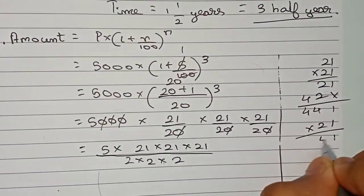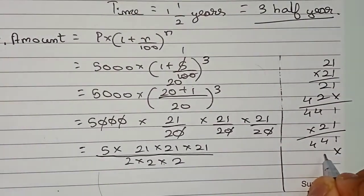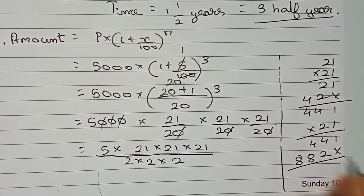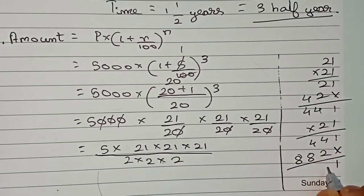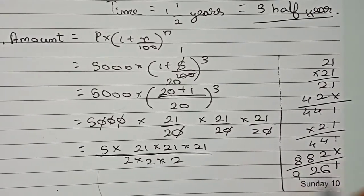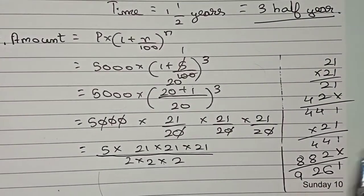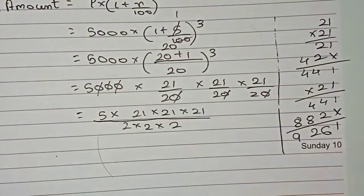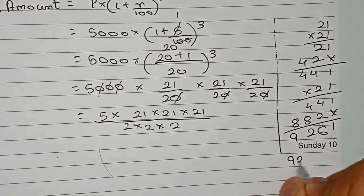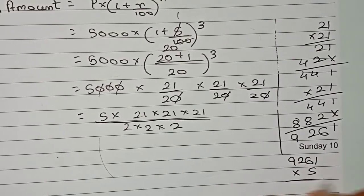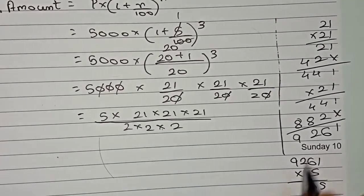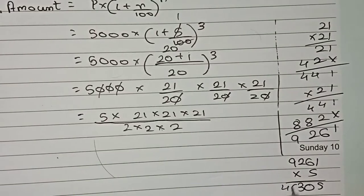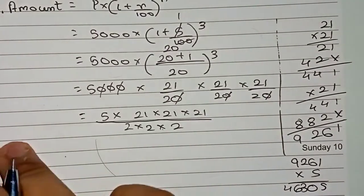Now 441 × 21: working through the multiplication gives 9261. Then 9261 × 5: 5×1=5, 5×6=30 carry 3, 5×2+1=11 carry 1, 5×9+1=46, giving 46305. The denominator is 2×2×2 = 8.